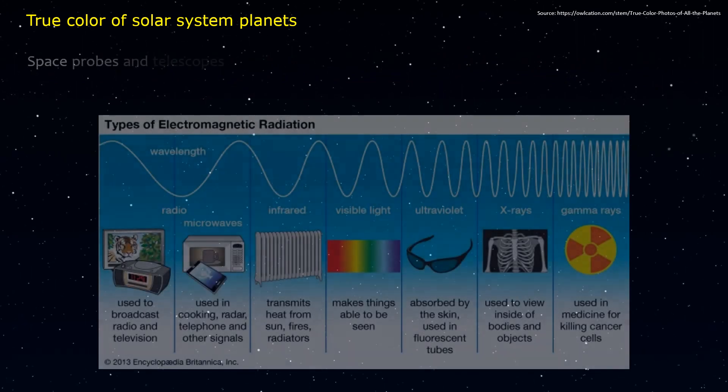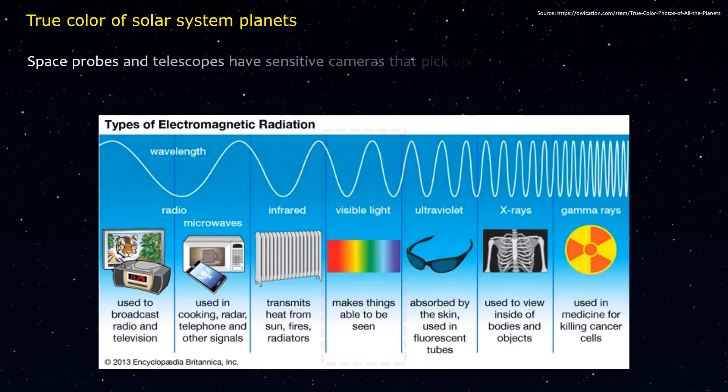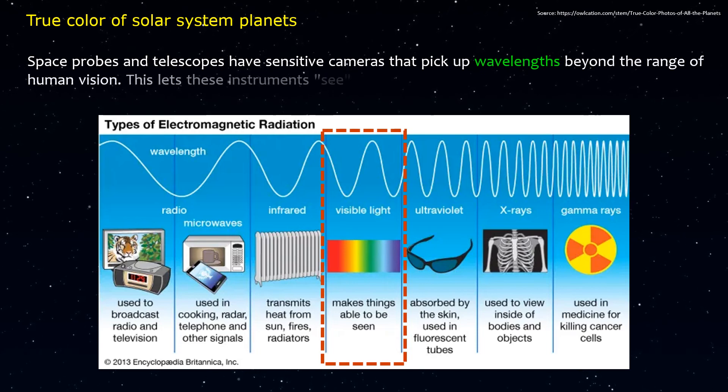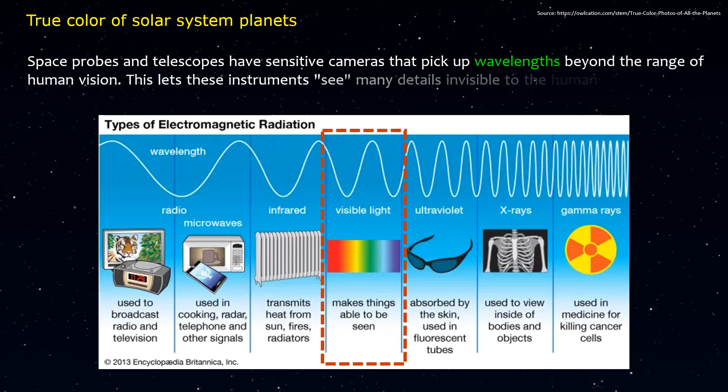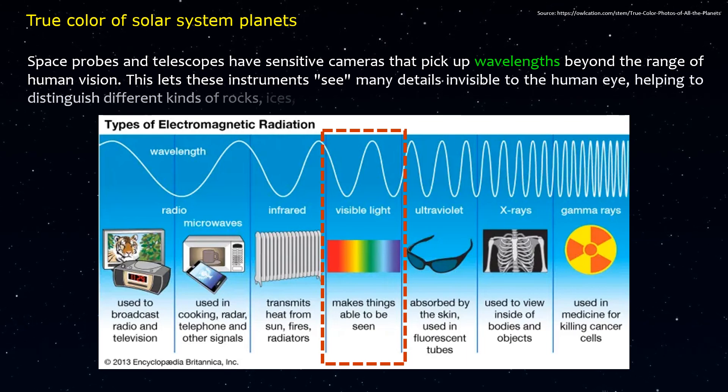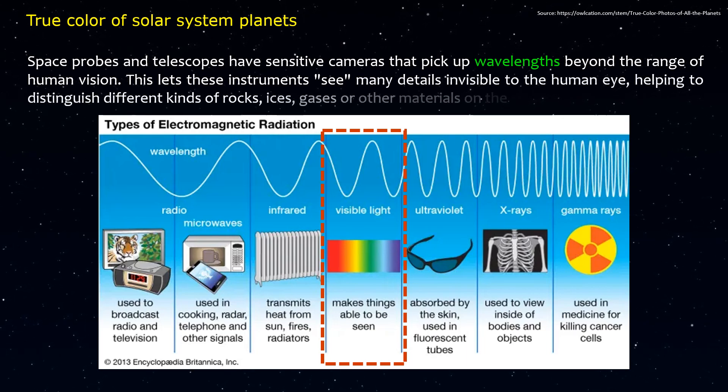Space probes and telescopes have sensitive cameras that pick up wavelengths beyond the range of human vision. This lets these instruments see many details invisible to the human eye, helping to distinguish different kinds of rocks, ices, gases, or other materials on the surface.